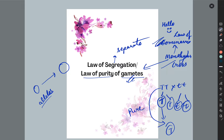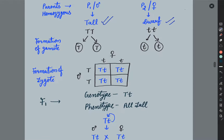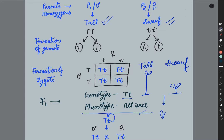Now let us look at the theory of the monohybrid cross. What does the monohybrid cross look like? Here we have a tall plant and here we have a dwarf plant. So we can see the difference. In the F1 generation, we have no intermediate plant and no dwarf plant — we have only tall plants. The parents will express their traits.